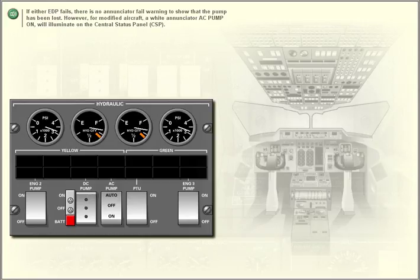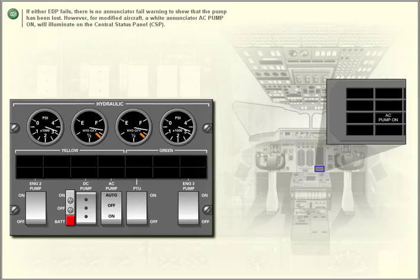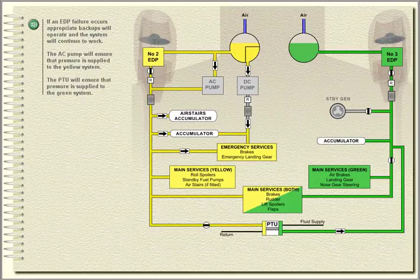However, for modified aircraft, a white annunciator AC pump on will illuminate on the central status panel. If an EDP failure occurs, appropriate backups will operate and the system will continue to work.